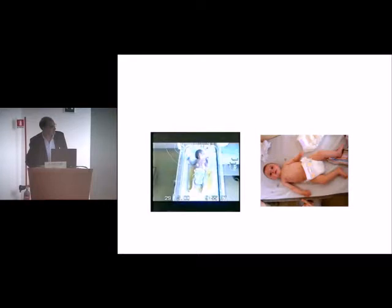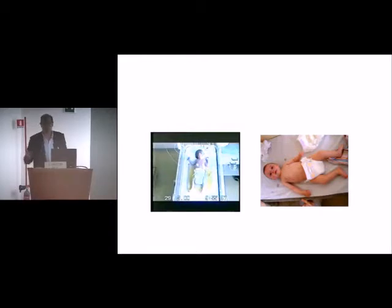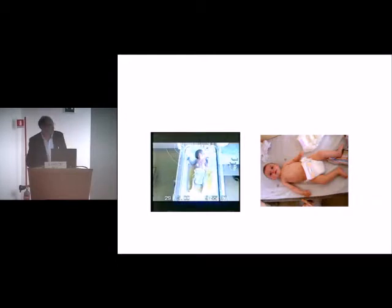Here are two examples. The first is a slightly preterm child who doesn't move a lot. If you look at his legs, there is a long period when you only see movements in the feet, and more movements in the arms. But then suddenly, he is disturbed by something, and you see the legs go up from the bed — an antigravity movement — so it's unlikely this child has a neuromuscular problem.